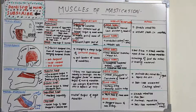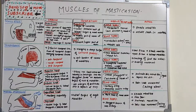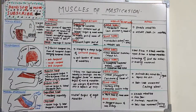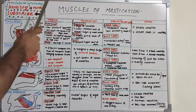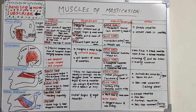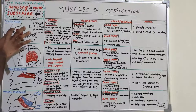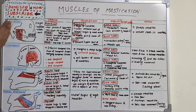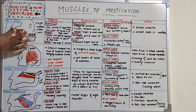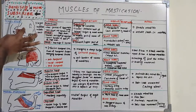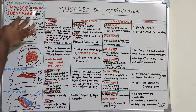The origin of the masseter's three layers: the superficial layer originates from the maxillary process of the zygomatic bone and the anterior two-thirds of the inferior border of the zygomatic arch.